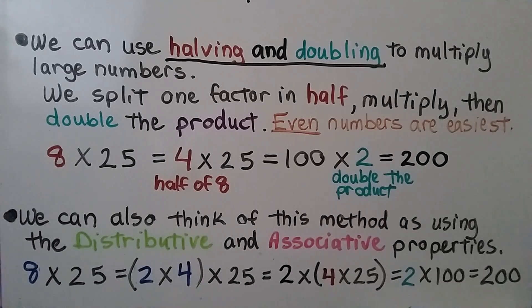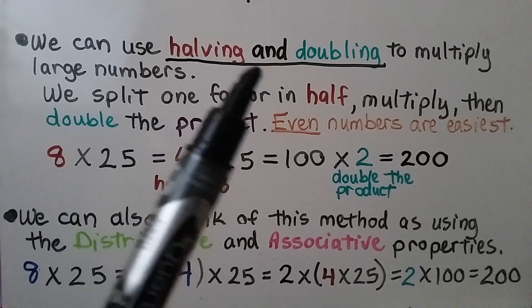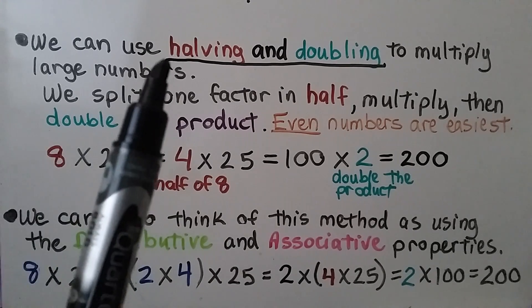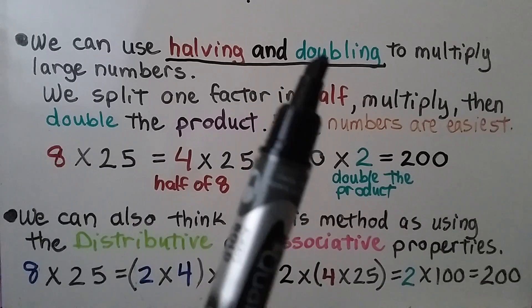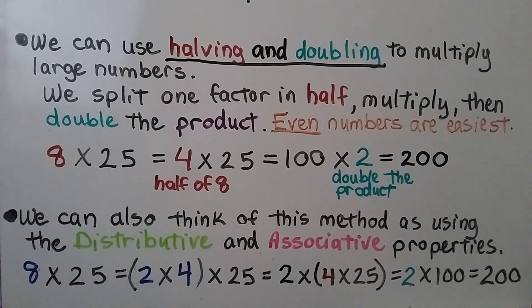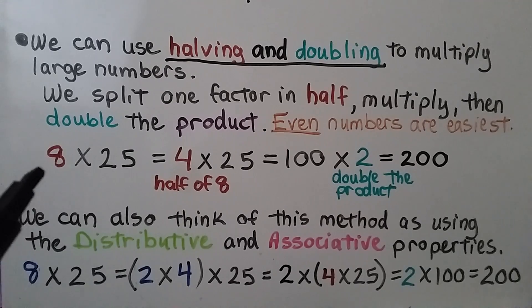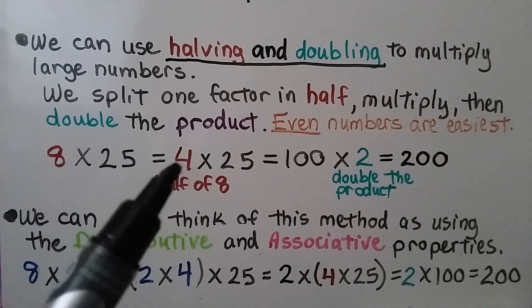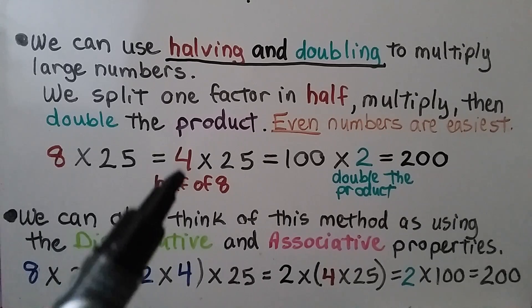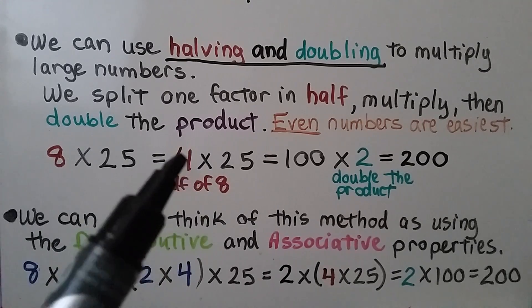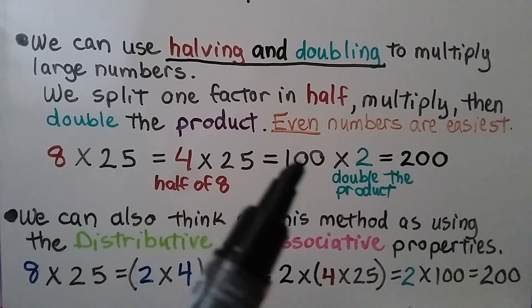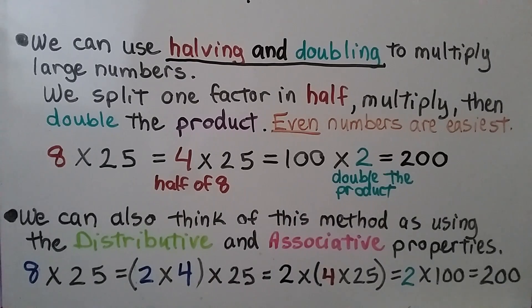We can use halving and doubling to multiply large numbers. Halving means cutting it in half, and doubling would be multiplying it by 2. We split one factor in half, so half of 8 is 4. We multiply 4 times 25, then we get 100, and we double the product. We do 100 times 2, it's 200.